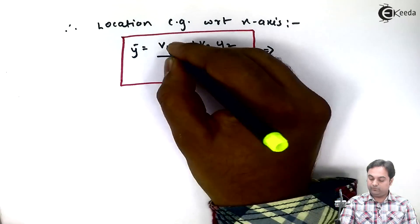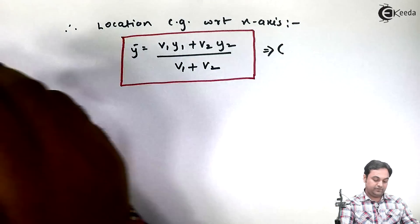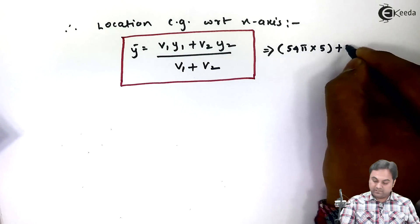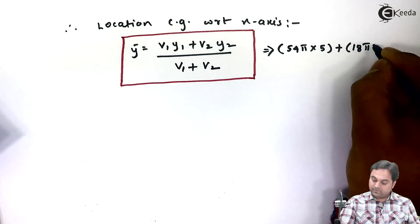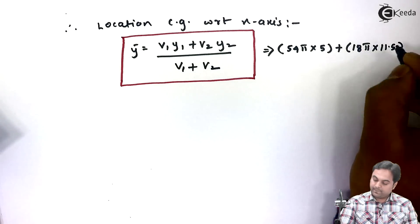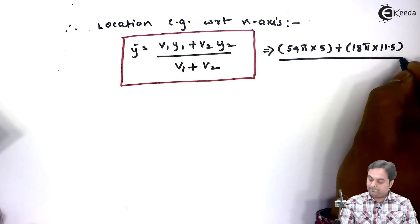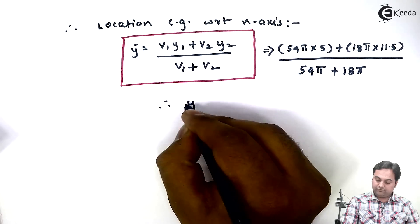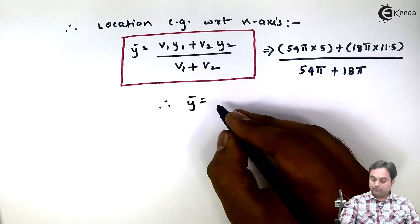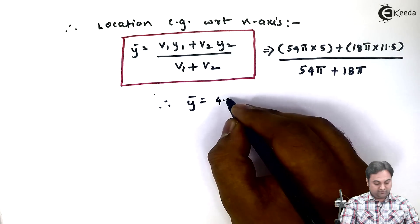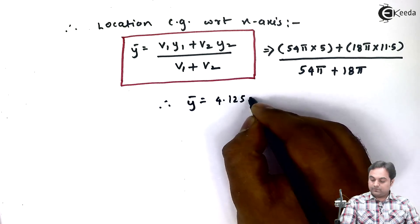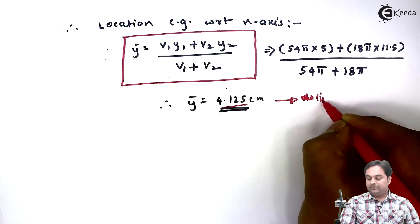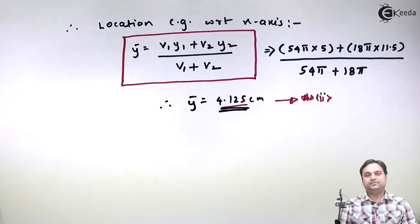Therefore this will be equal to V1. We have found out V1 was 54 into pi. So from this I will get the value of Y bar, and my answer is 4.125 centimeters. So once we have X bar and Y bar values we can say we have found the center of gravity, and with this the problem is over.